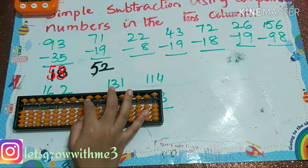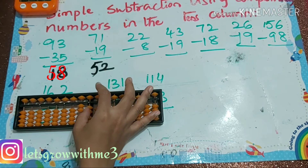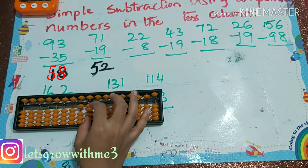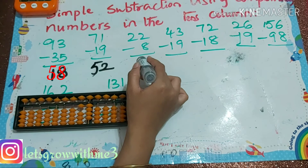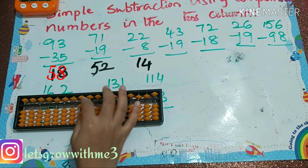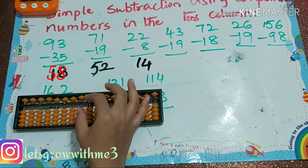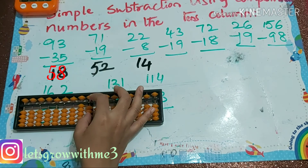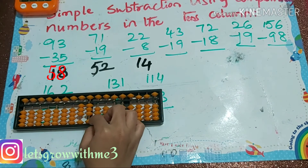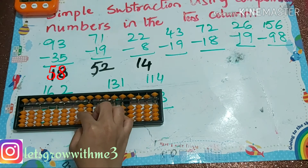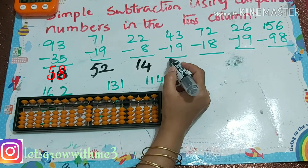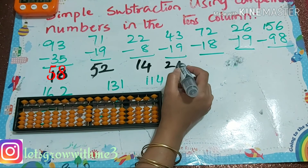Next one: 22 minus 8 — our answer is 14. Next: 43 minus 19. Minus 1, minus 9 — how to do minus 9? Minus 10 plus 1. Our answer is 24.